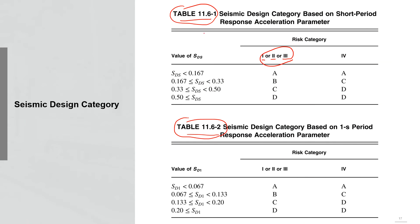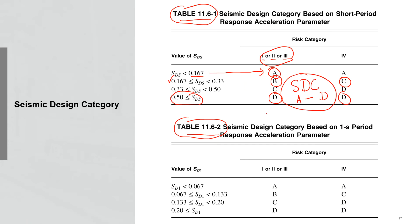First is Table 11.6-1. You check the risk category — for example, 1, 2, or 3 — and the SDS value. If SDS is less than 0.167, pick SDC A. If SDS is between 0.167 and 0.33 and risk category is 1, 2, or 3, go with B; if risk category is 4 for that same SDS range, it becomes C. If SDS is greater than 0.5, whether risk category is 1, 2, 3, or 4, the seismic design category will be D. This table gives you one SDC from A to D based on SDS.